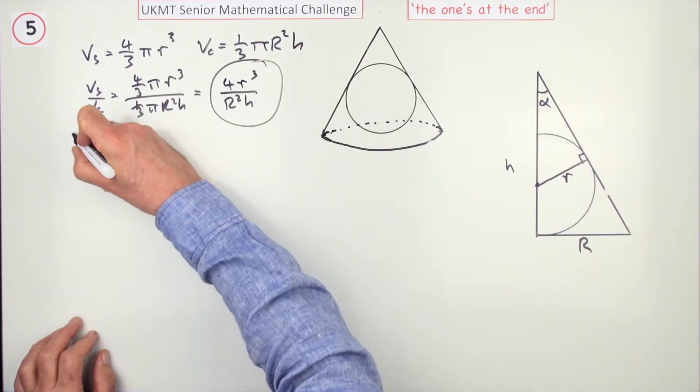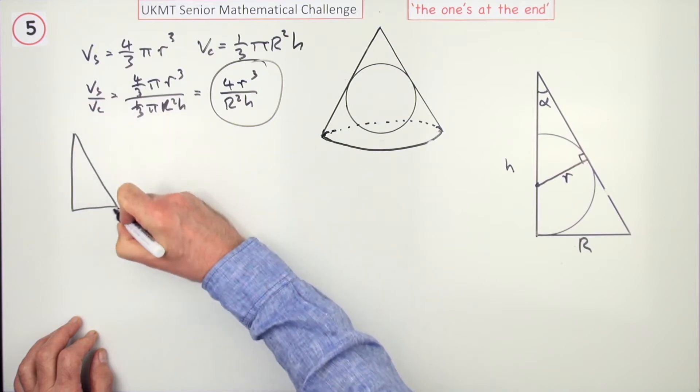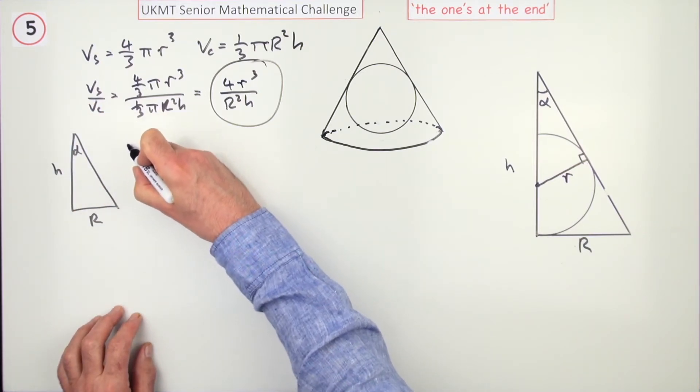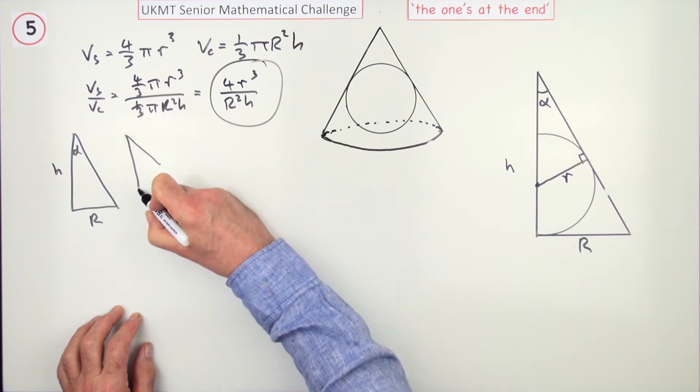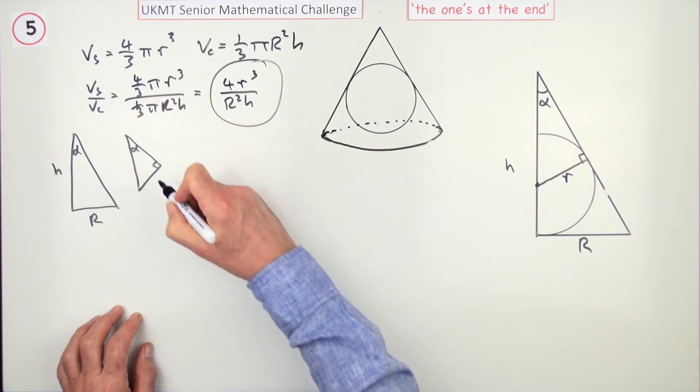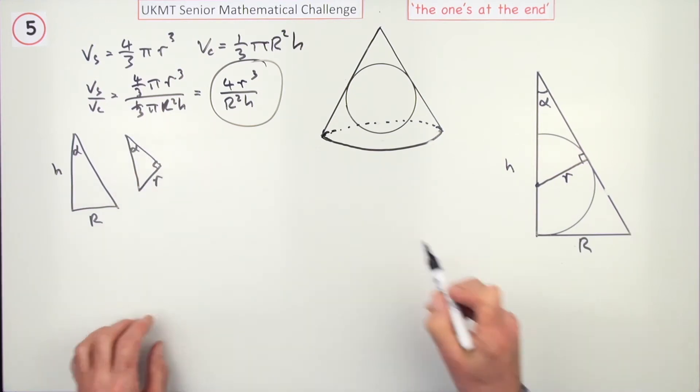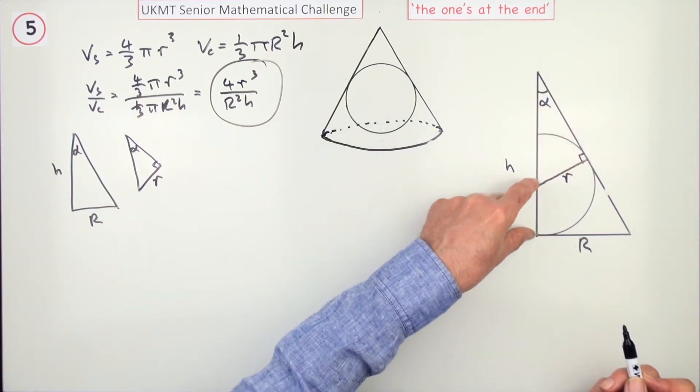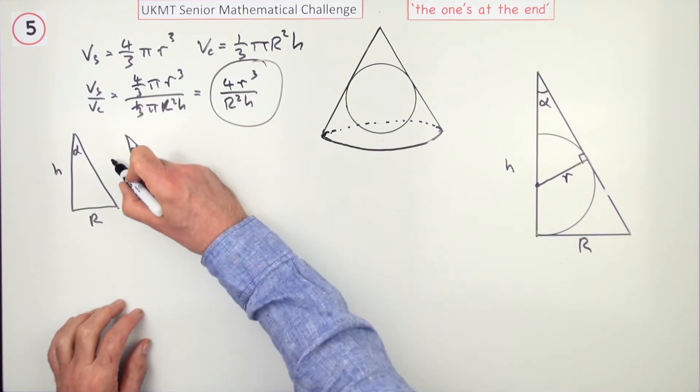I'll just put them over here. You've got the large right-angled triangle with R and H and α, and you've got this smaller one, which I'll not draw to scale, which again has got α, and it's got small r. The remaining distance here, since the radius is R, this is also R, the remaining distance will be H minus R.